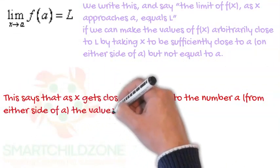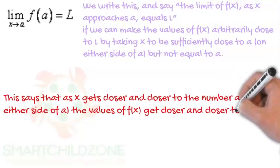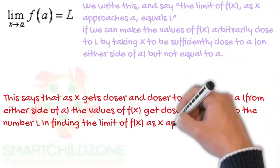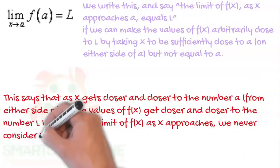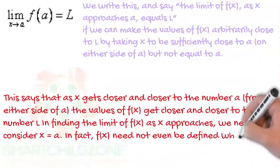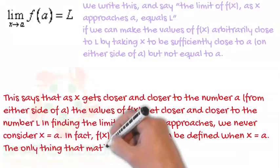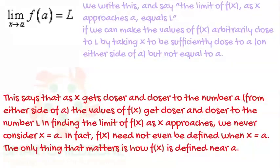This says that as x gets closer and closer to the number a from either side, the values of f(x) get closer and closer to the number L. In finding the limit of f(x) as x approaches a, we never consider x equals a. In fact, f(x) need not even be defined when x equals a — the only thing that matters is how f(x) is defined near a.